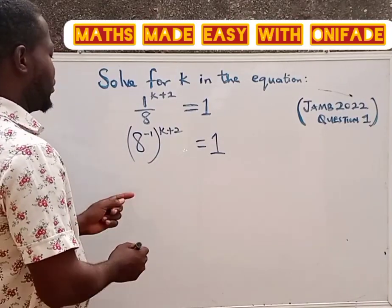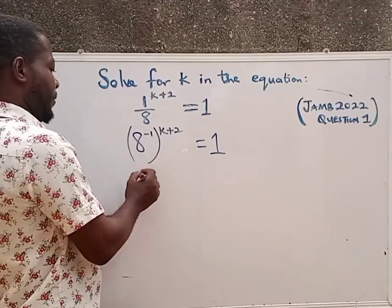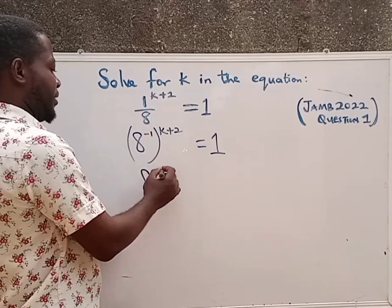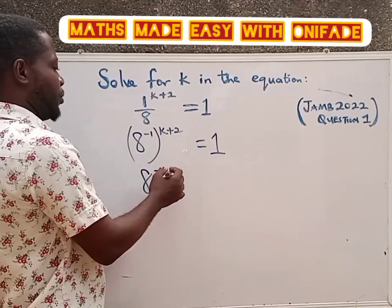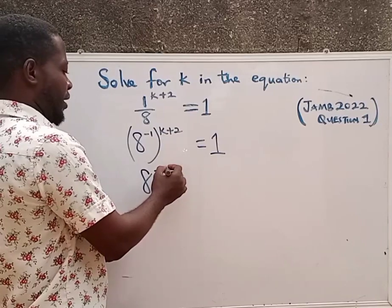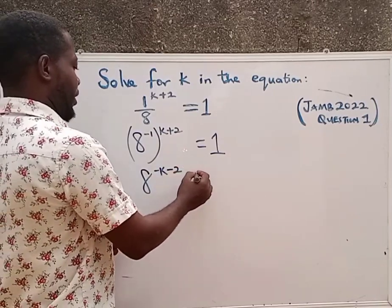Now the next thing to do is multiply: minus 1 times k gives us minus k, and minus 1 times plus 2 gives us minus 2.